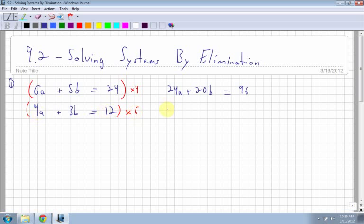Next thing I do is I multiply the second equation by 6, so I get 24a, which is good. That's what I wanted, these two to be the same. I multiply the 3 by 6, so I get 18b. 12 by 6 is 72.